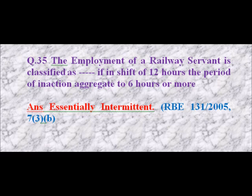Question 35: The employment of a railway servant is classified as what, if in a shift of 12 hours the period of relaxation aggregates to 6 hours or more? Answer: essentially intermittent.